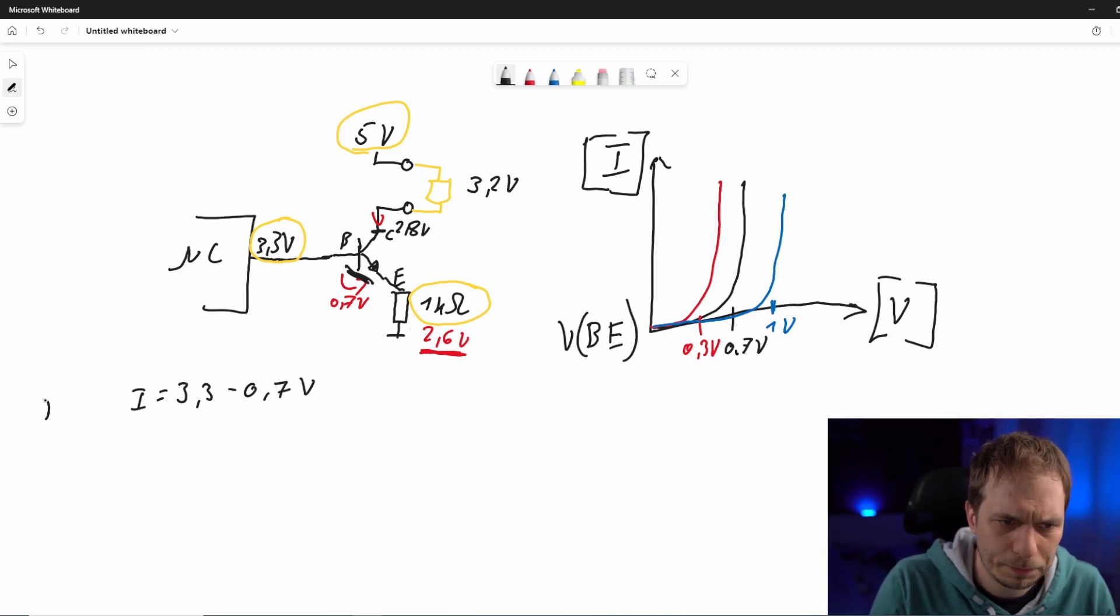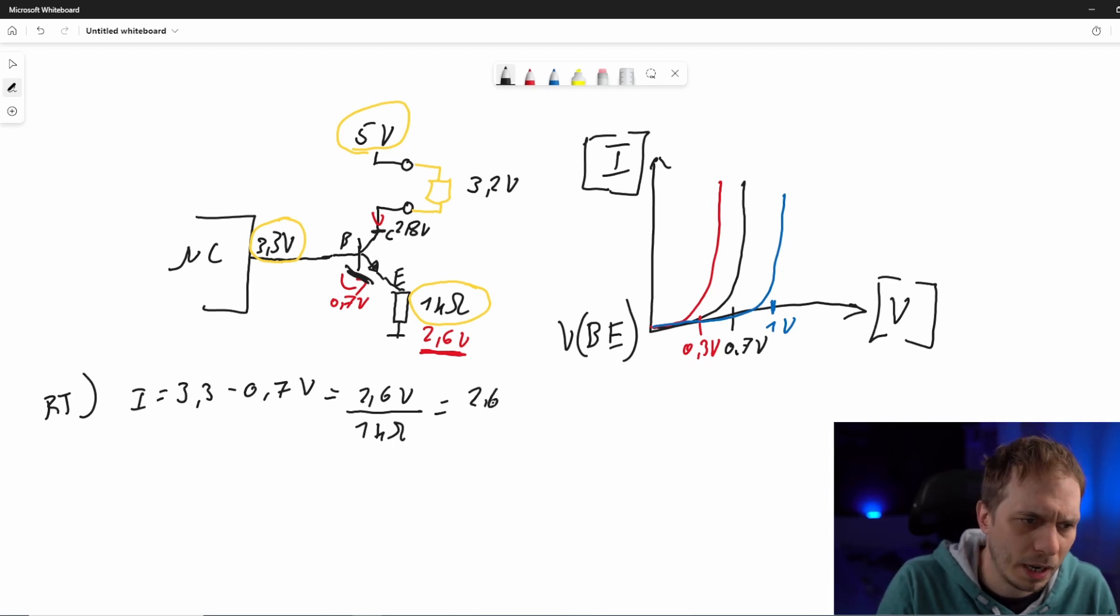So let's think a bit about the current. I start here with 3.3 and give this a minus 0.7 volts - this is at room temperature by the way - and then I have this 2.6 volts where we already calculated. This we will divide by one kilo-ohm because it's a resistor, and this gives us 2.6 milliamps.